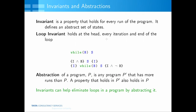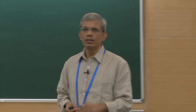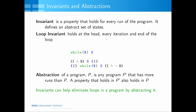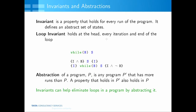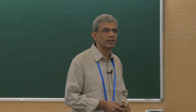An invariant is a property that holds at a program point for every run of the program at all times — whenever code reaches that point, it holds. A loop invariant holds when you reach the head of the loop and at every iteration. An interesting property of a loop invariant is that when the loop terminates — when you have the invariant I and the negation of the loop condition — the loop invariant still holds together with the negation of the loop condition.